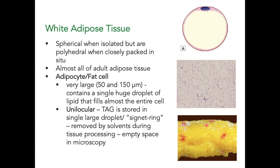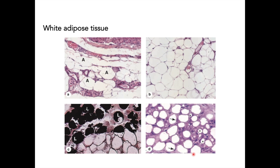This is the gross cut surface of fat — it appears yellow. In histologic sections of white or unilocular adipose tissue, the cells are closely associated with dense irregular connective tissue and blood vessels. After processing, the lipid dissolves and the cells appear polyhedral.